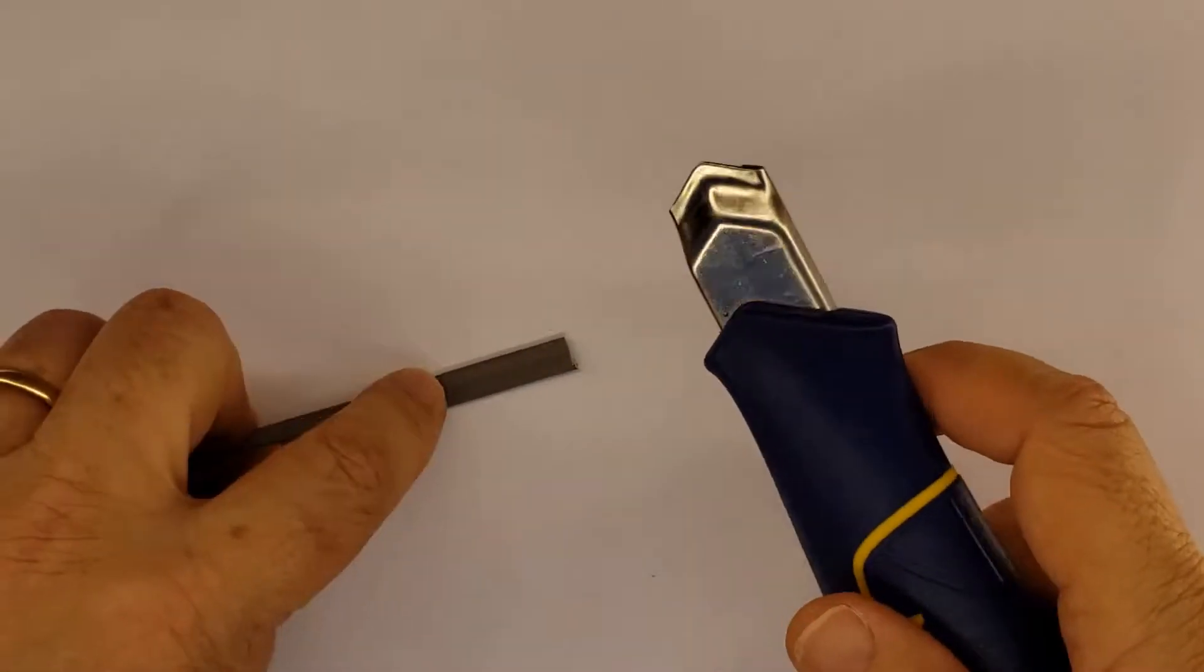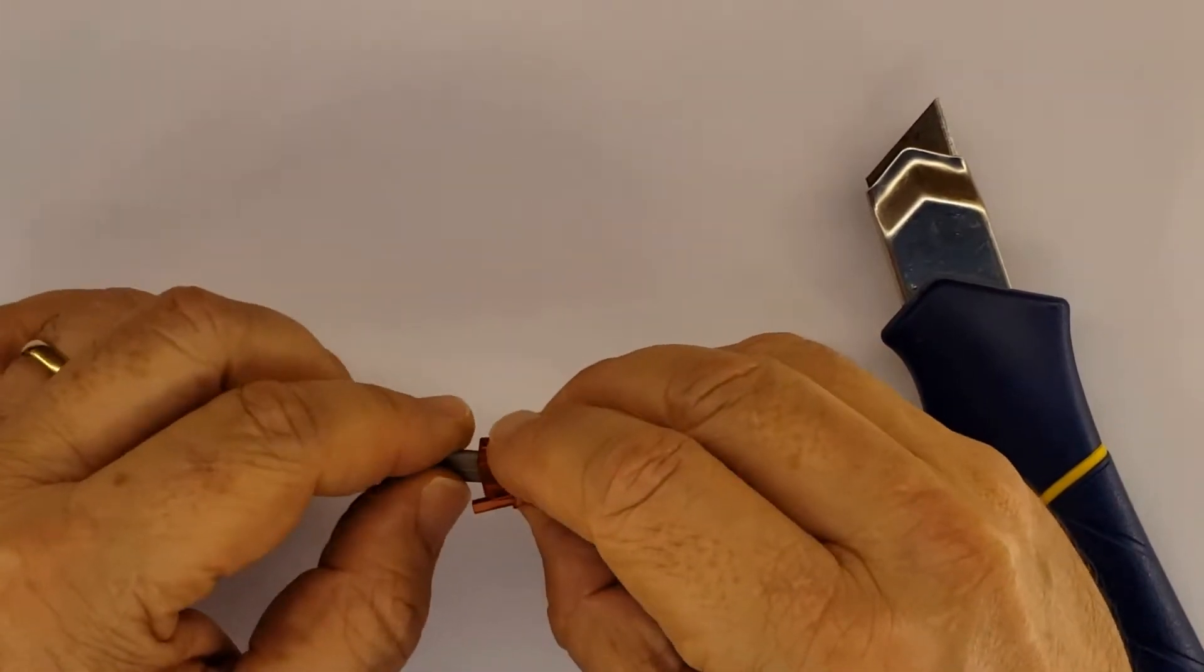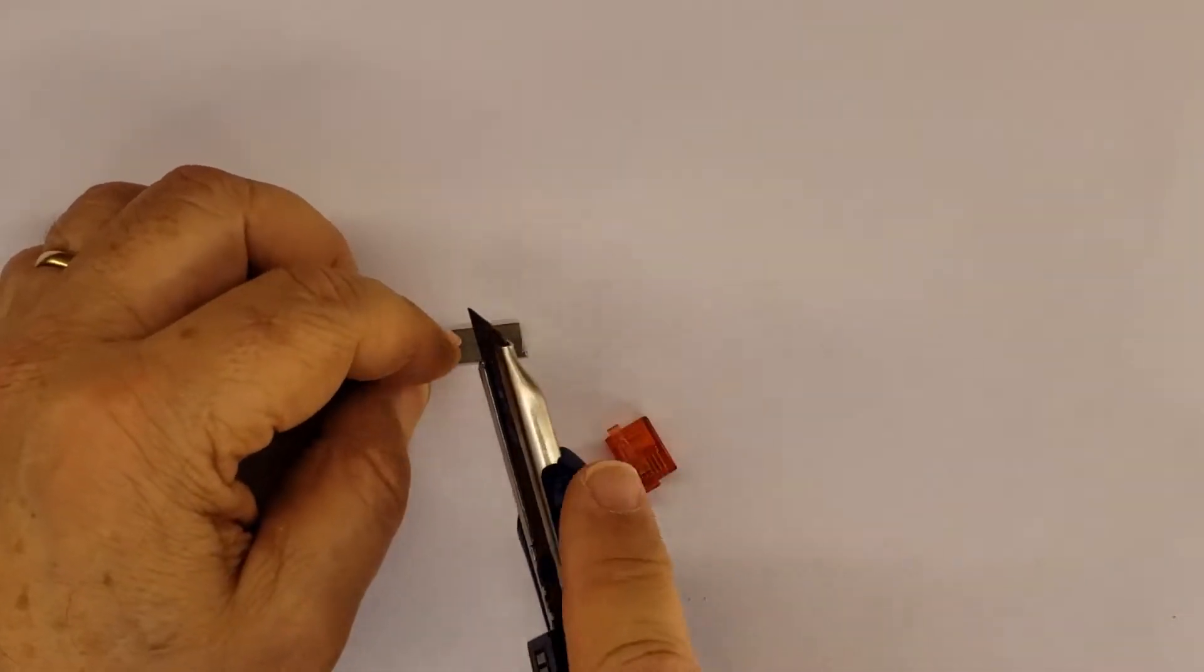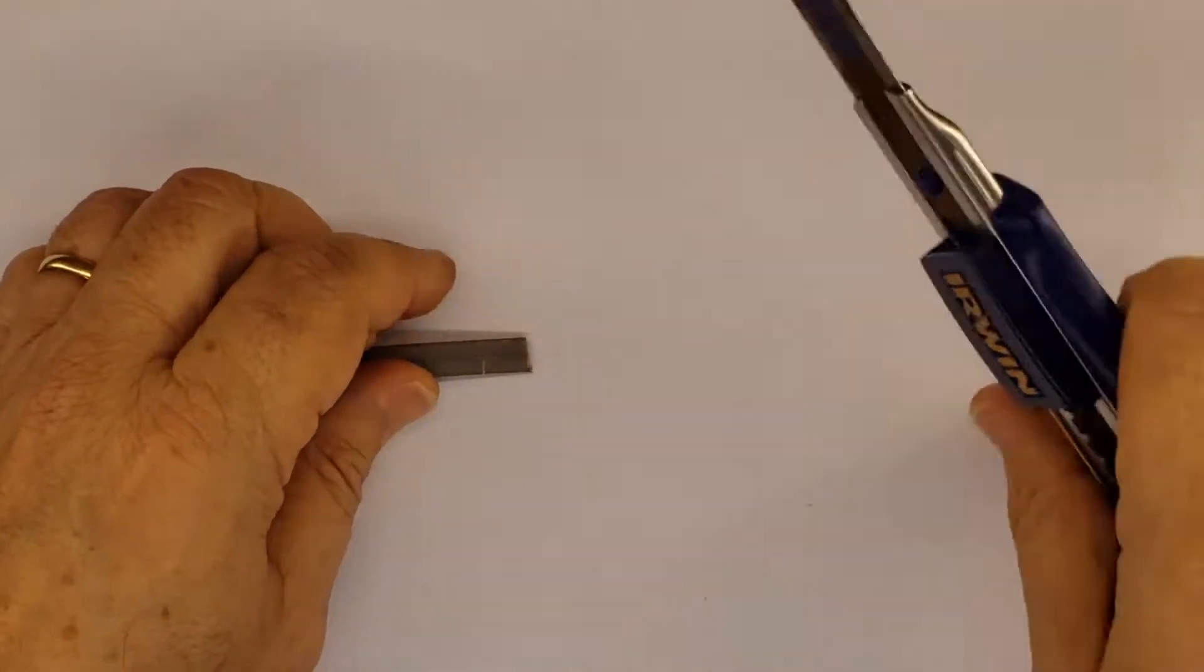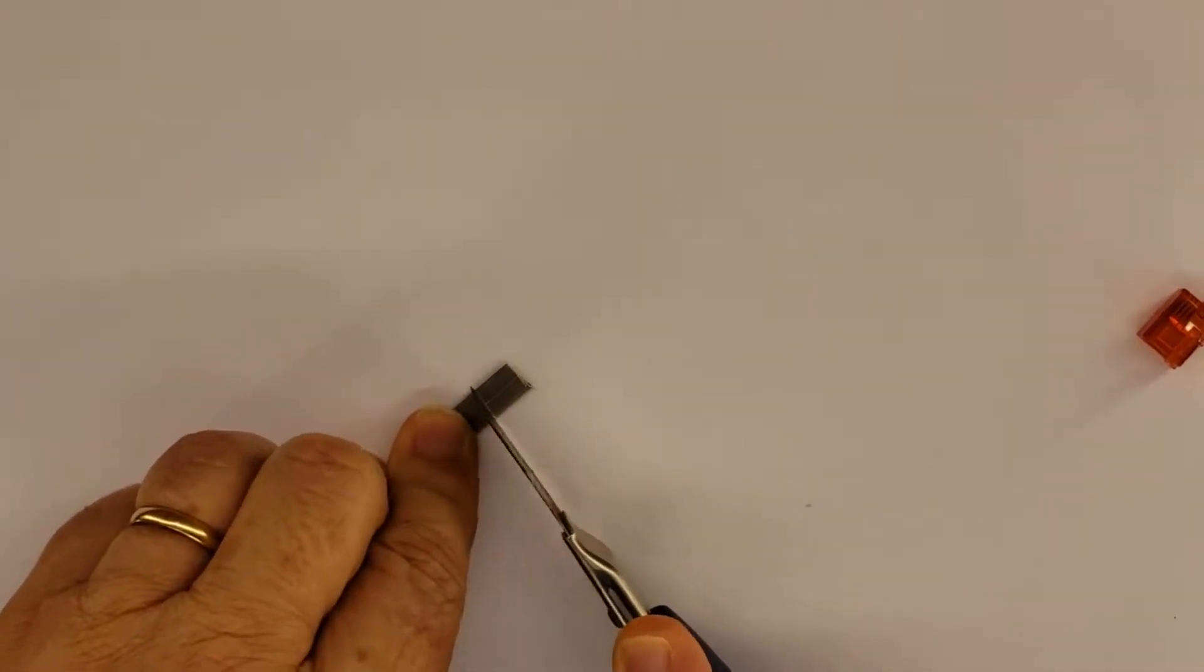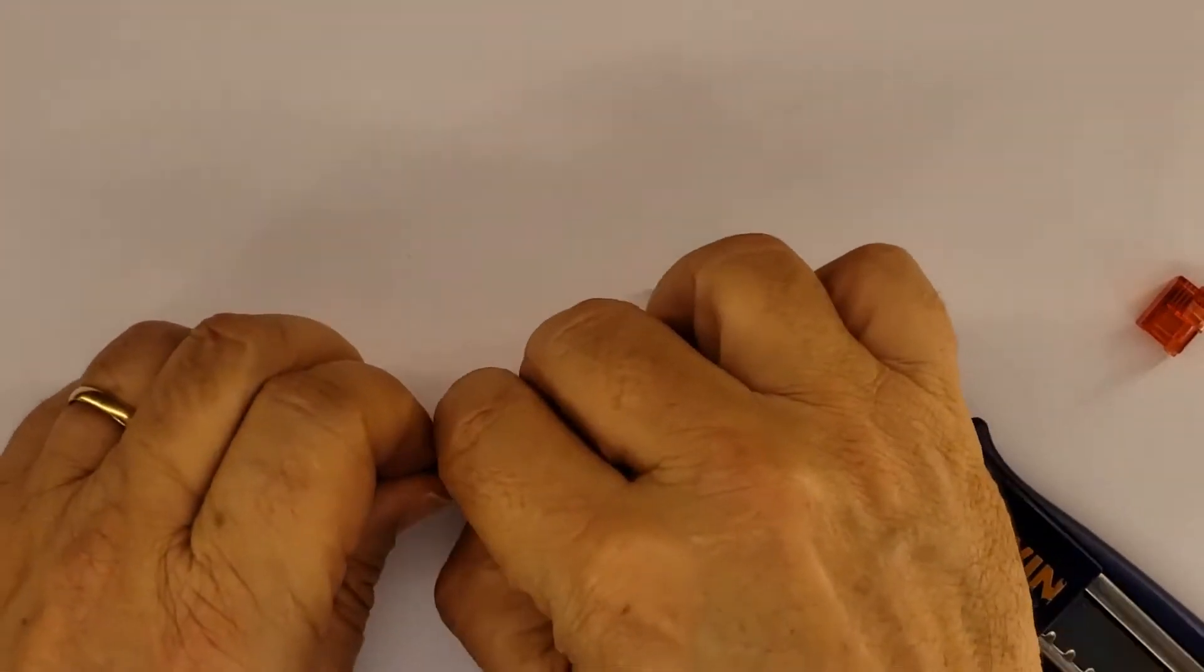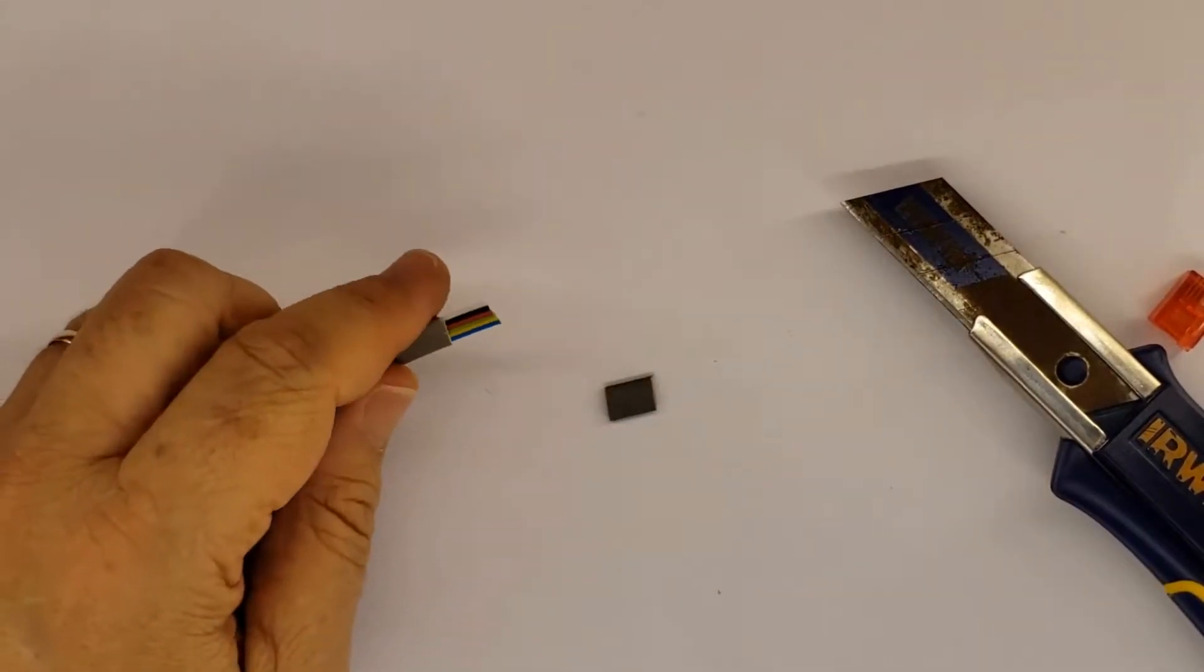Get a knife and we have to cut it right here in this position. You have to be very careful not to cut the internal six wires.